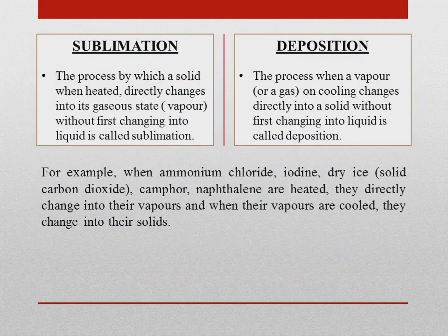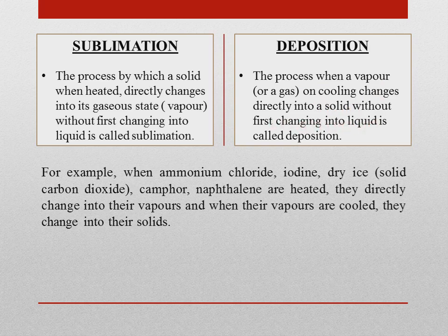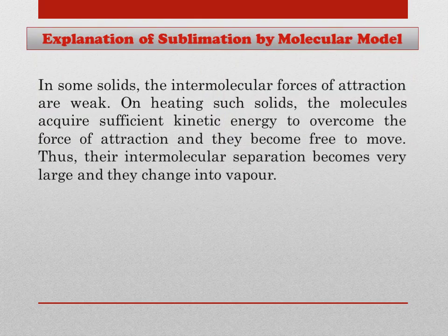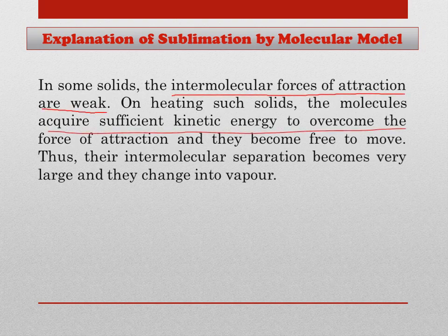The process by which a solid, when heated, directly changes from solid state to gaseous state without changing into liquid is called sublimation. While the process when a vapor on cooling changes directly from vapor to solid without changing into liquid is called deposition. Examples of solids that sublime include ammonium chloride, iodine, dry ice, etc. Sublimation is observed only in solids where the intermolecular force of attraction is very weak. On heating such solids, the molecules acquire sufficient kinetic energy to overcome the force of attraction and are free to move. Thus, the intermolecular separation becomes very large and they change into vapor.